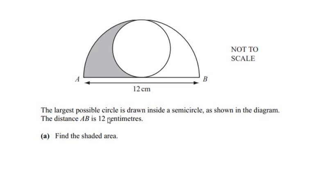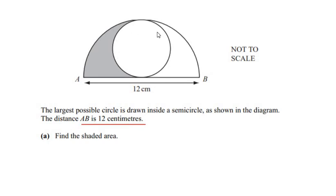Hello and welcome to my channel. In this video we are going to solve an example on mensuration. The largest possible circle is drawn inside a semicircle as shown in the diagram. The distance AB is given as 12 centimeters. Find the shaded area. Here we can see that there is a circle enclosed within the given semicircle.